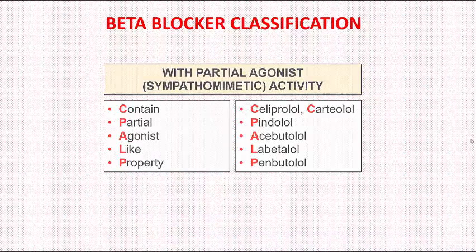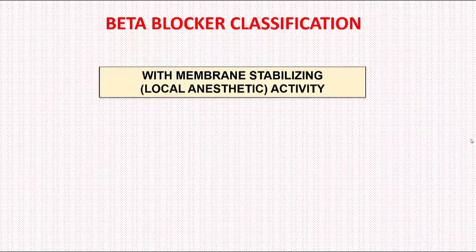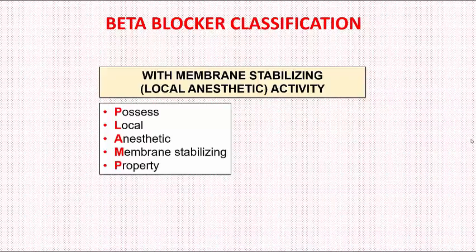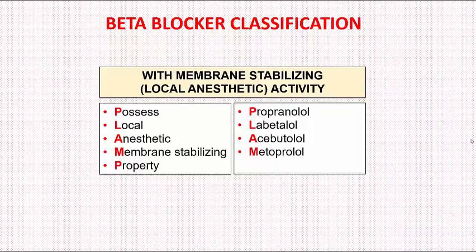Now we move to the third category: beta blockers having membrane stabilizing or local anesthetic activity. The mnemonic is: 'Possess Local Anesthetic or Membrane Stabilizing Property' — where P stands for propranolol, L stands for labetalol, A stands for acebutolol, M stands for metoprolol, and P stands for pindolol.